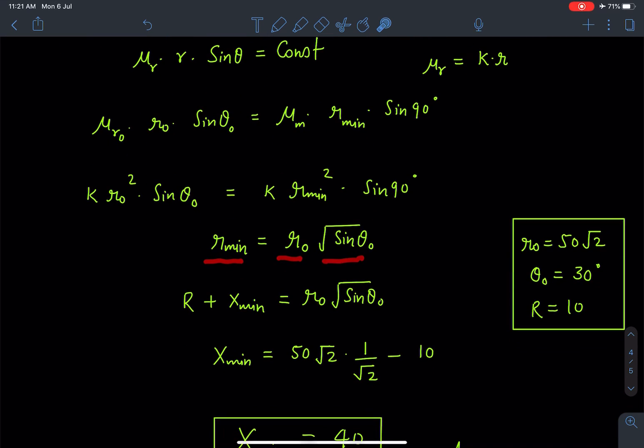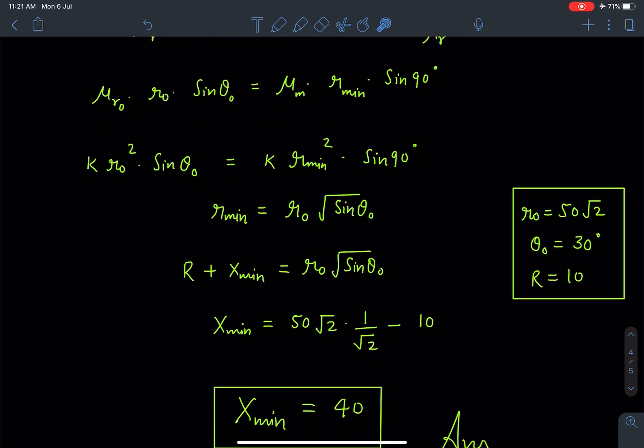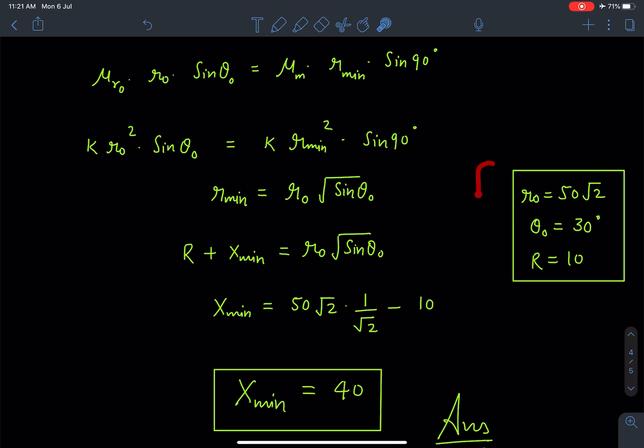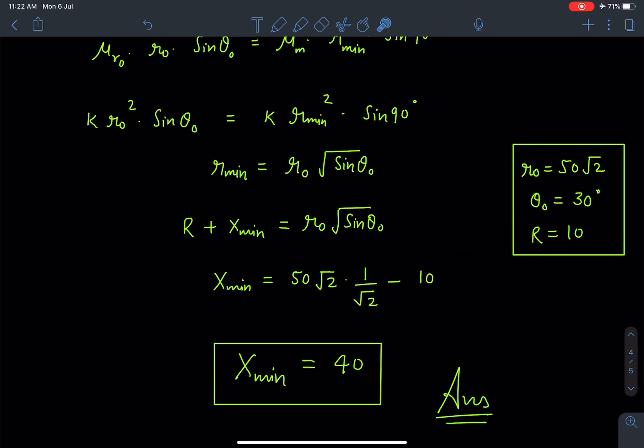On substituting the values as per the problem - these values are given as r₀ = 50√2, θ is given as 30°, and R is given as 10 - when I substitute these values, a simple calculation comes and I get x_min as 40. So this is the answer for this problem.